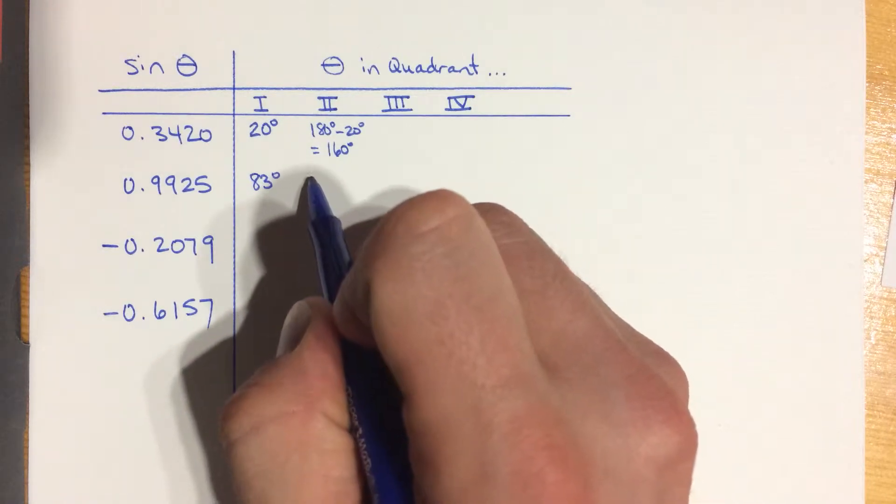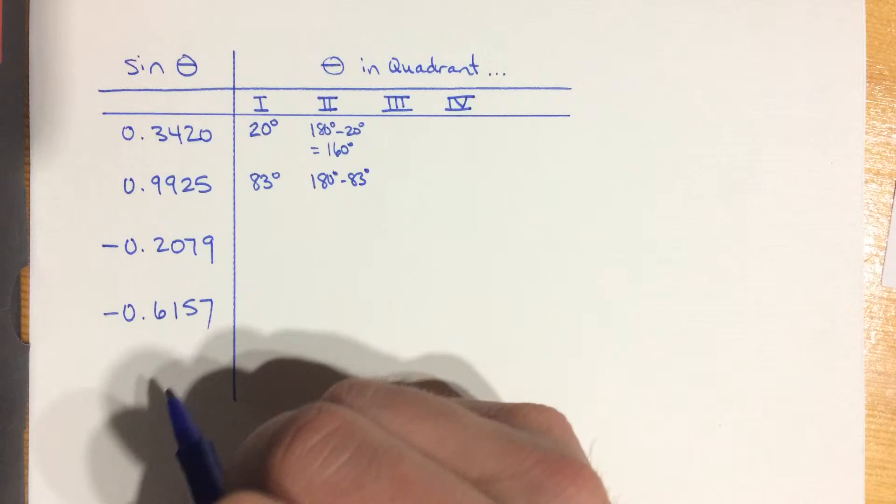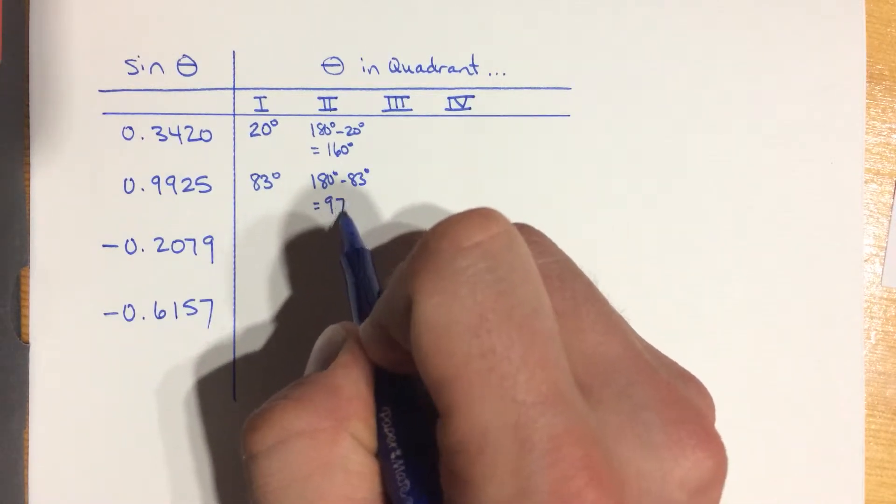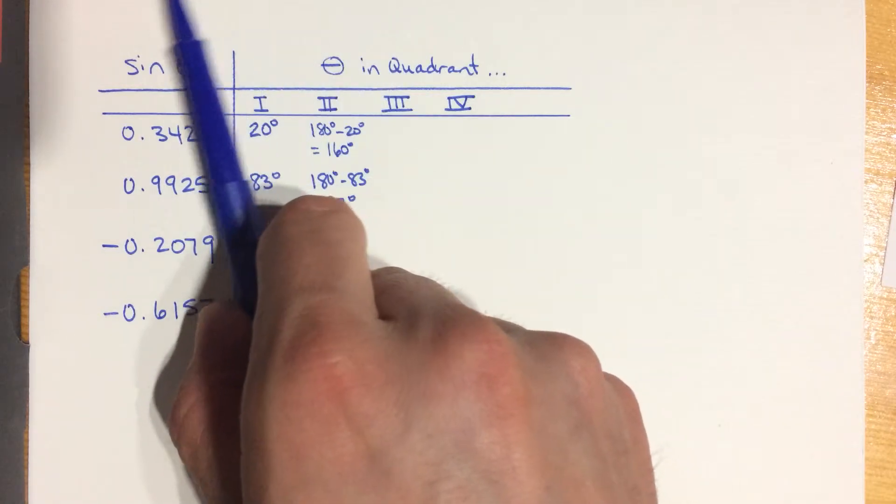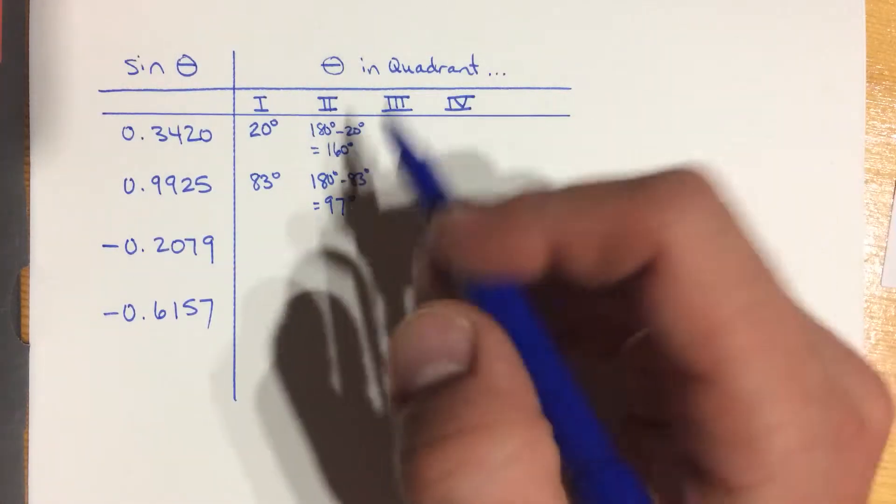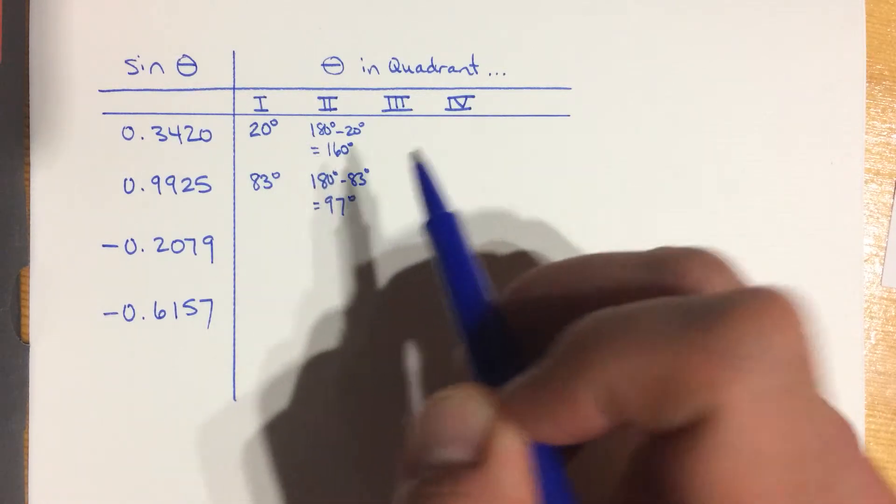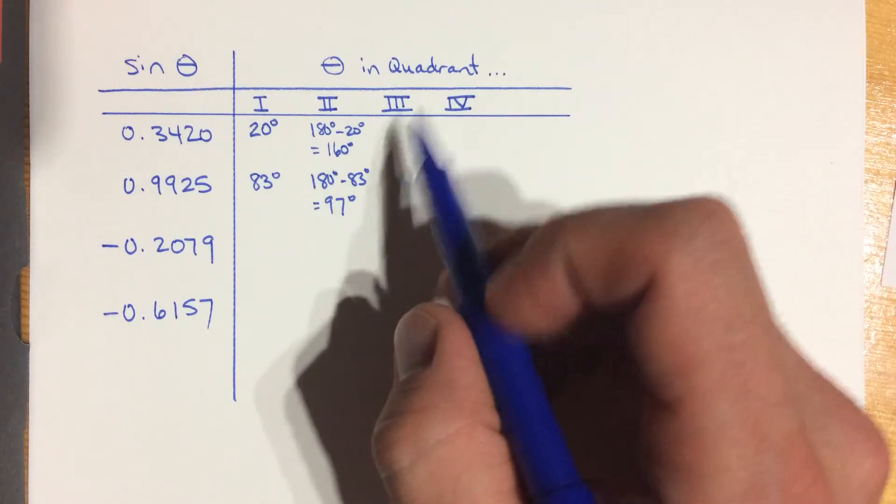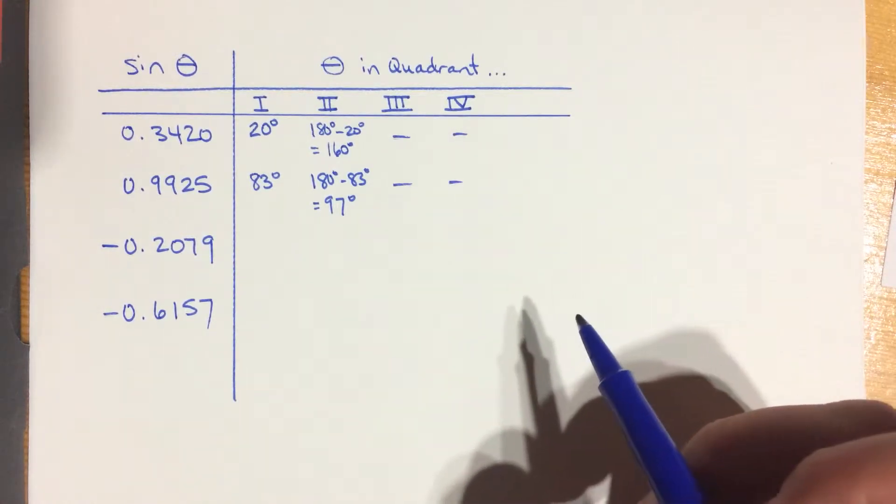But if it's in the second quadrant, I have to take 180 degrees and subtract the 83, which will leave me with 97 degrees. So it just kind of goes from one side of the y-axis over to the other. And these are symmetrical. If you draw these angles onto a graph, you'll see that they all line up. And once again, you can't have anything over here. It can't be in the third or fourth quadrants.